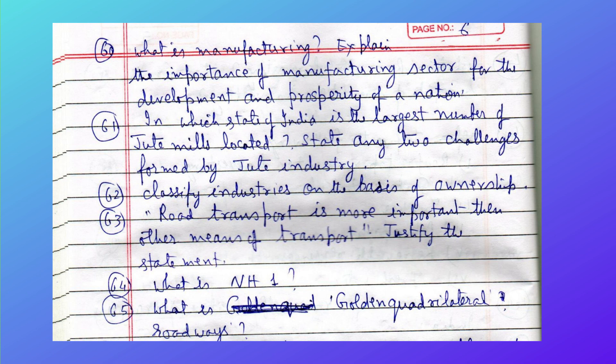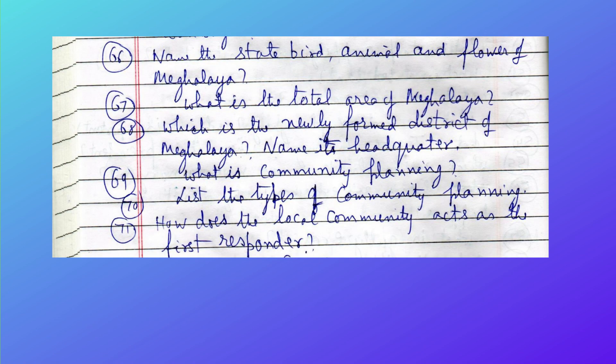Road transport is more important than other means of transport — justify this statement. What is NH1? What is the Golden Quadrilateral road project? Name the state bird, animal, and flower of Meghalaya. What is the total area of Meghalaya? Which is the newly formed district of Meghalaya — name its headquarters. What is community planning? List the types of community planning and how does the local community act as the first responder?